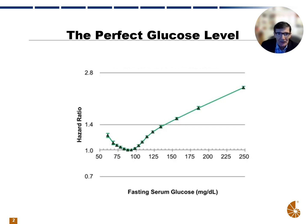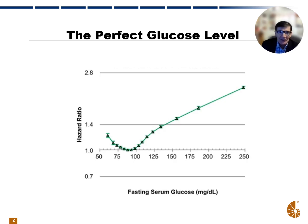So the higher the fasting serum glucose level in milligrams per deciliter, the higher the hazard ratio. You can also notice that there is some upward movement in the curve at low glucoses, but today we're going to be talking about what happens with high glucoses and how that affects the body.